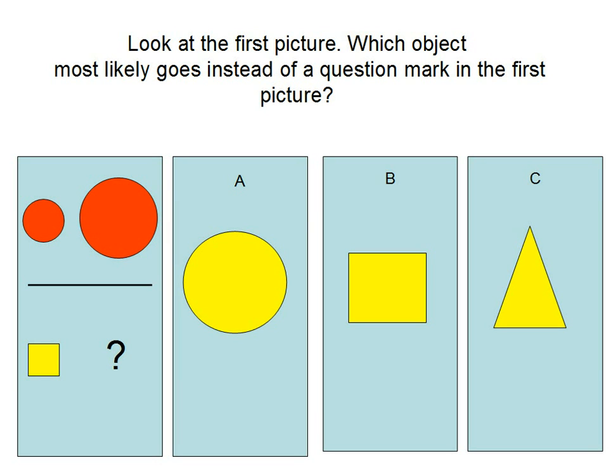Look at the first picture. Which object most likely goes instead of a question mark in the first picture?